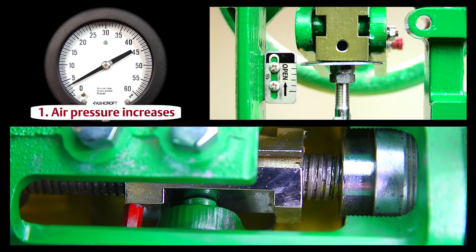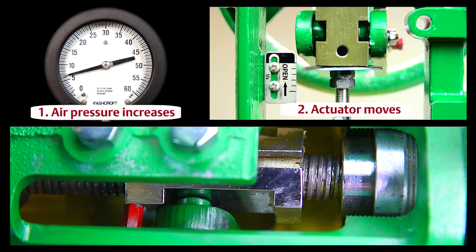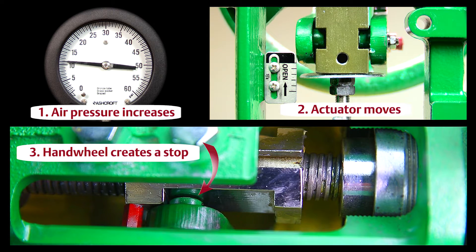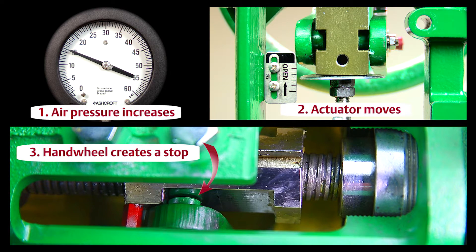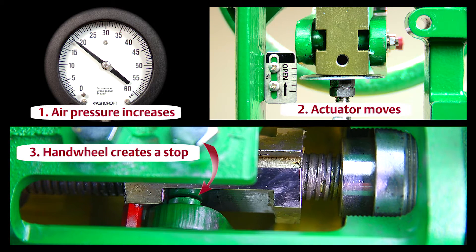Leaving the handwheel engaged in any position other than neutral will create an adjustable stop that prevents the valve from fully opening or fully closing.